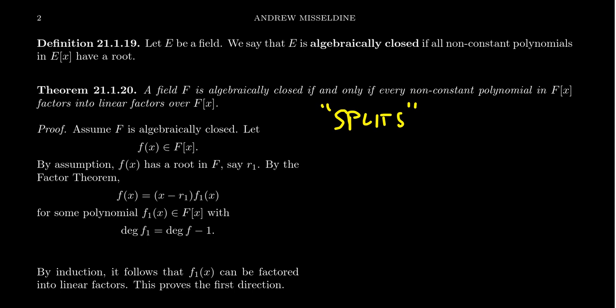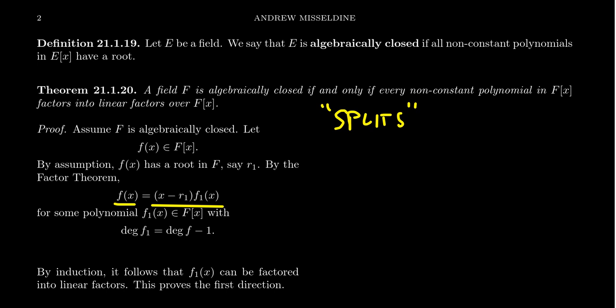Let's prove this. One direction is much easier than the other, so we'll take the harder direction first. Assume that F is algebraically closed, and take a non-constant polynomial f(x) that belongs to the polynomial ring F[X]. By assumption, because F is algebraically closed, the polynomial f(x) has a root. Let's call that root R₁.